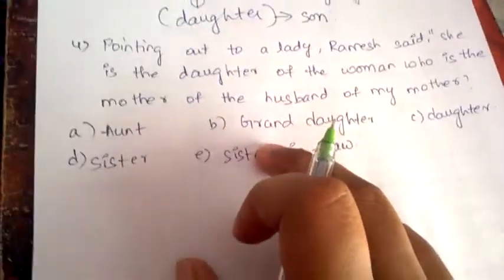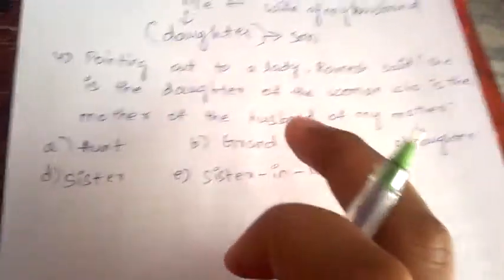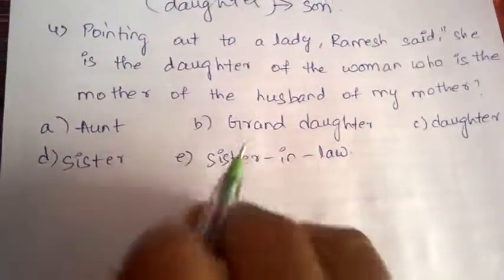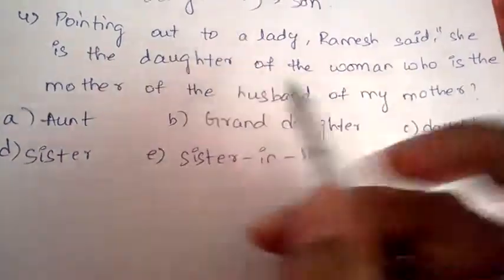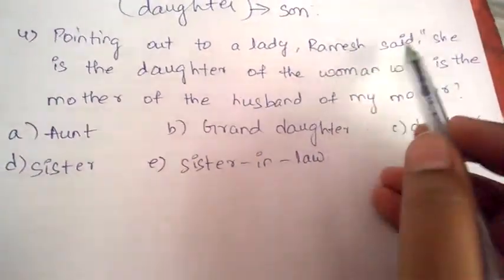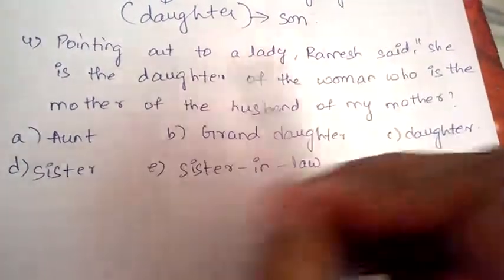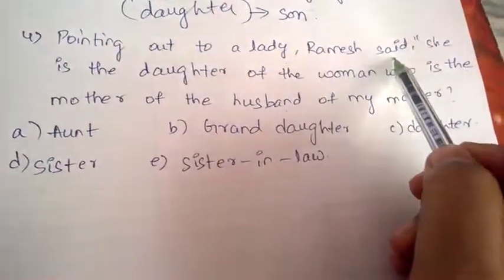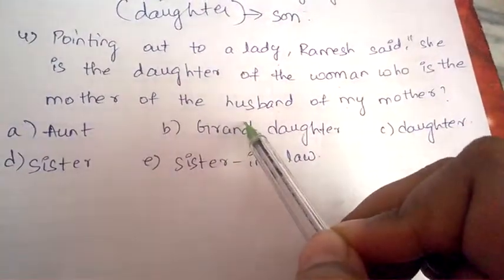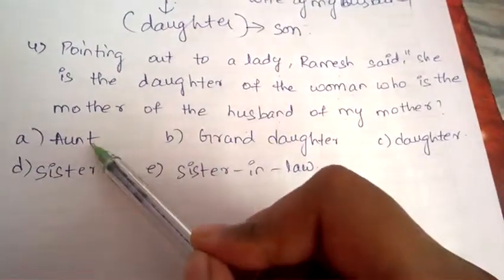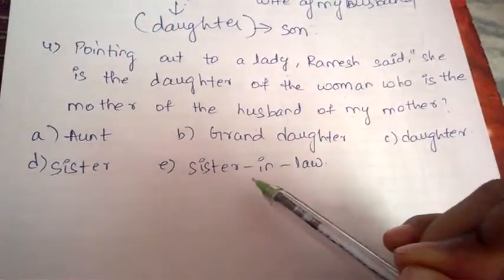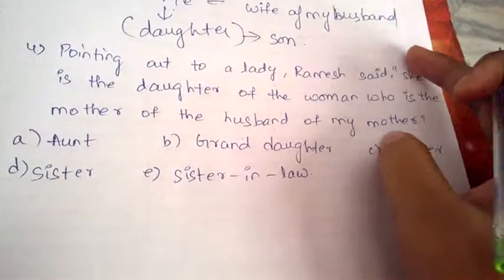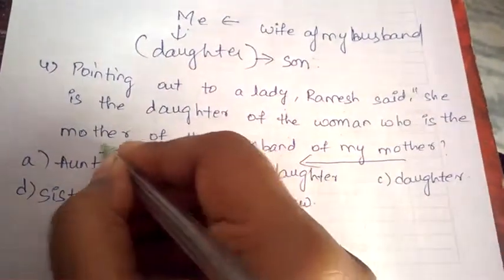Now here is a question for you to solve. Pointing out to a lady, Ramesh said: 'She is the daughter of the woman who is the mother of the husband of my mother.' The options are: aunt, granddaughter, daughter, sister, and sister-in-law. Use the backward direction technique to solve it and let me know your answer in the comment section below.